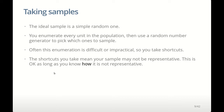The ideal sample is a simple random one where we label everyone in the population and then use a random number generator to pick which ones are in the sample. But if you imagine doing that in New Zealand — giving everyone a number from one to five million — then using a random number generator to pick out, say, a thousand of them, those thousand people would be scattered all over the country and going to talk to them would be quite difficult.